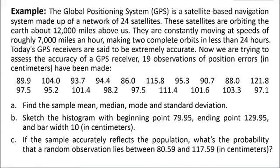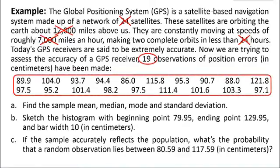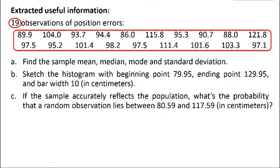After a glance at the problem, we find that what we are focusing on are the position errors of the GPS receiver. So we don't need the operating parameters of the satellites, such as the number of satellites is redundant. How far away are the satellites? The speed and the period of the satellites are all redundant. Only the sample size 19 and the sample values are useful.